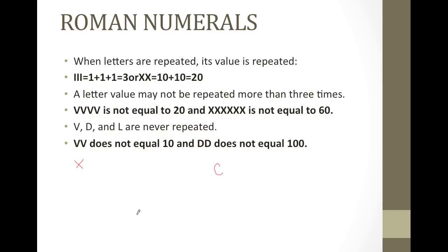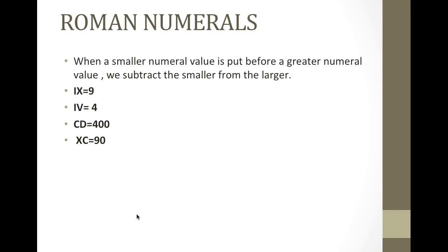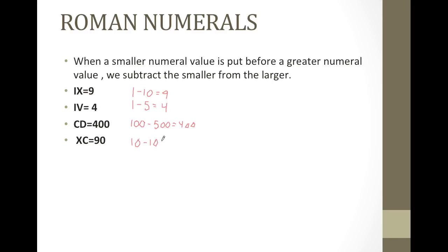When a smaller numeral value is put before a greater numeral value, we subtract the smaller from the larger. For example, ix: i is 1, x is 10, and because the 1 is before the 10, it equals 9. Similarly, iv is 1 minus 5 equals 4. For cd, c is 100 and d is 500, so 100 minus 500 equals 400. And xc is 10 minus 100, which equals 90.